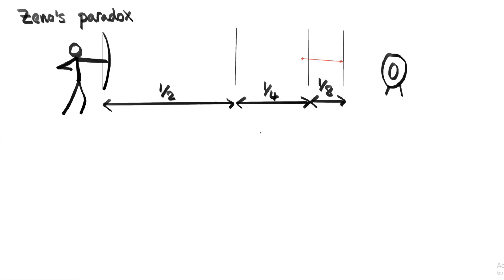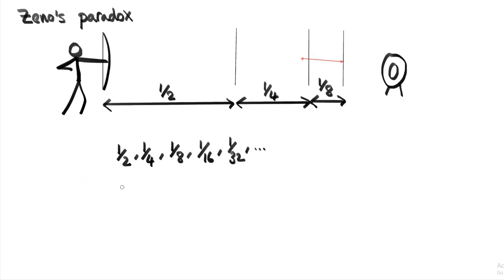But you can see how in this way we've ended up with a list of numbers: a half, a quarter, an eighth, a sixteenth, one over 32, and so on. A sequence is just a list of ordered numbers. The ellipsis on the end indicates that the sequence is going to go on forever and ever. And that's what we mean by an infinite sequence — it's impossible to write down every single term in this list of numbers.